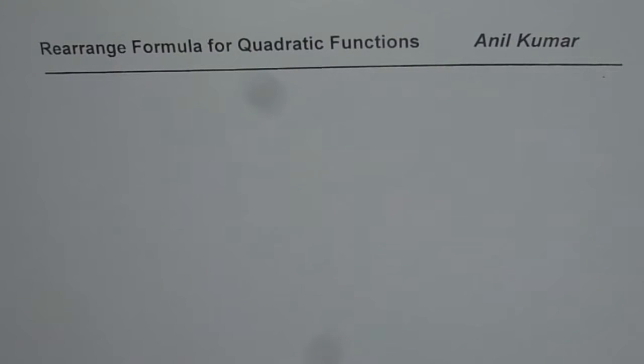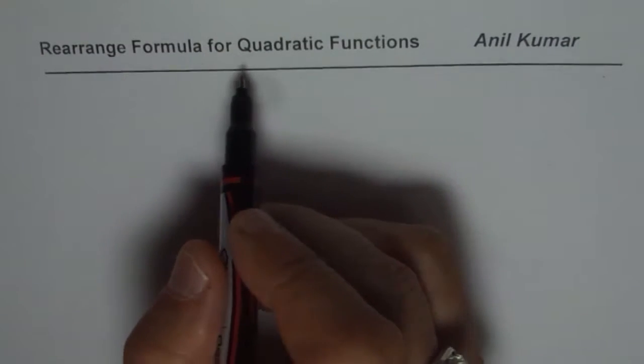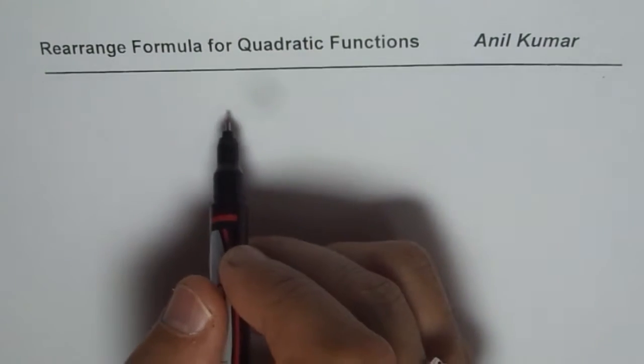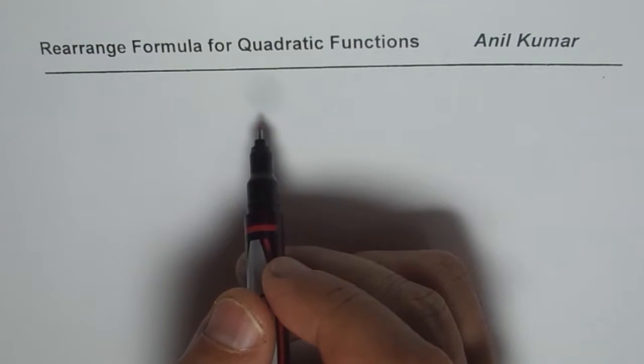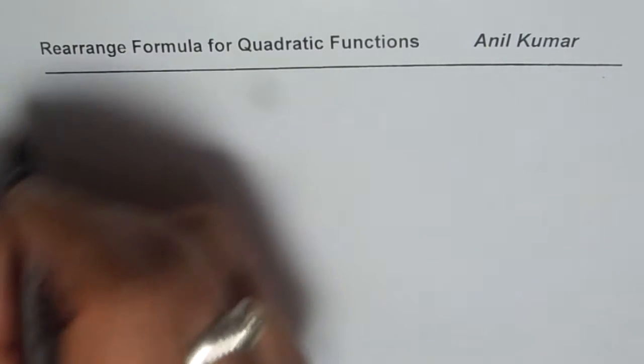I am Anil Kumar and in this series of rearranging formulas and understanding or reviewing what we have learned earlier, we will take up now rearranging a quadratic function so that we could understand its transformation and find maximum or minimum value. So for that, let me take one example.